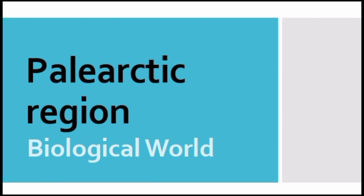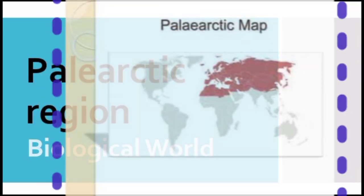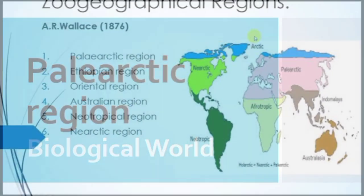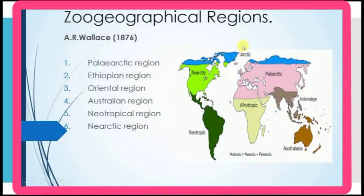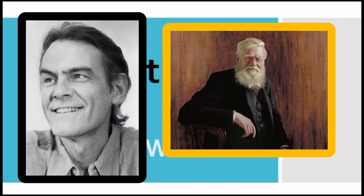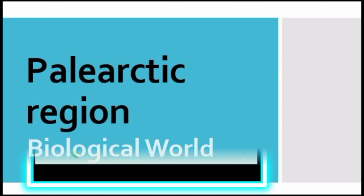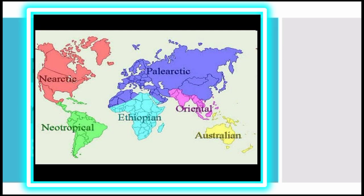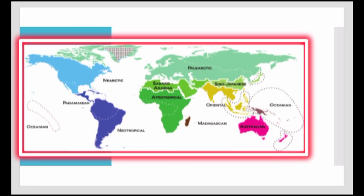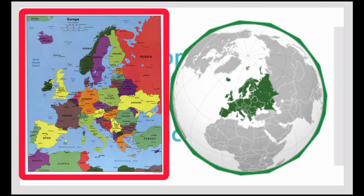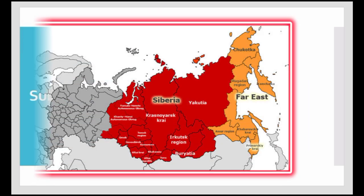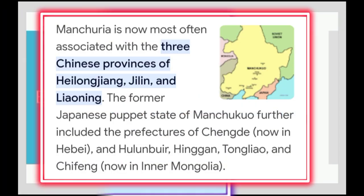Welcome. Now we will discuss the Palaearctic region. There are a total of six zoogeographical regions, which were discovered by Philip Sclater and Alfred Wallace. The Palaearctic region is the biggest of all six zoogeographical regions. The sub-regions included in the Palaearctic region are European, Mediterranean, Siberian, and Manchurian.